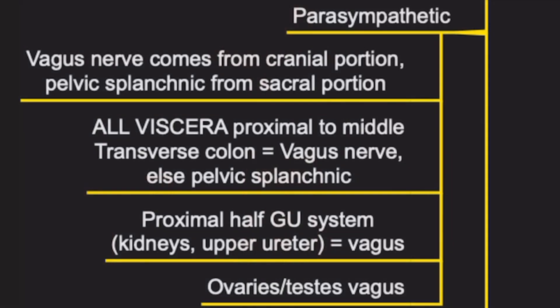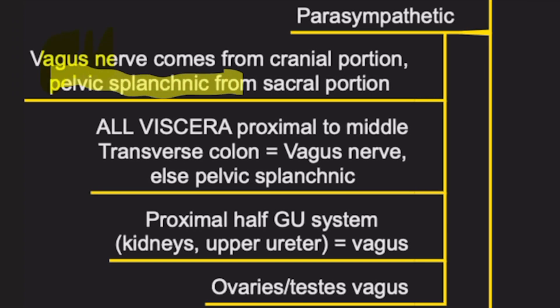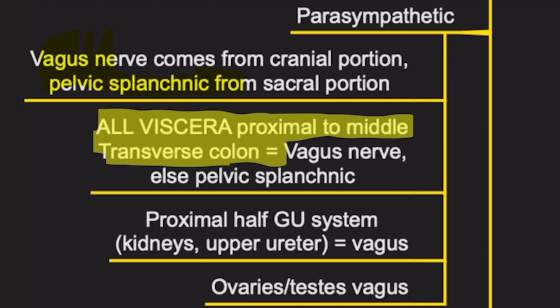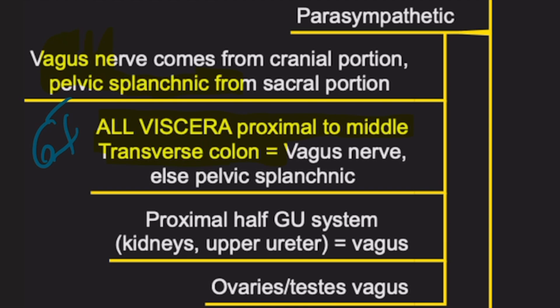Most questions will be about the sympathetic system, but there are some important pearls about the parasympathetic system. With regards to parasympathetics, all of this is either the vagus nerve or pelvic splanchnic nerves. The vagus nerve comes from the cranial portion and the pelvic splanchnic from the sacral portion. All viscera proximal to the middle transverse colon in the GI system is going to be vagus nerve. Anything after that for parasympathetics — like rectum and sigmoid — is going to be pelvic splanchnic nerves from the sacral portion.